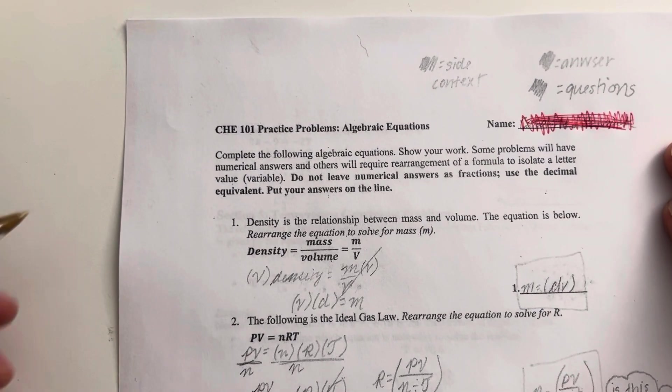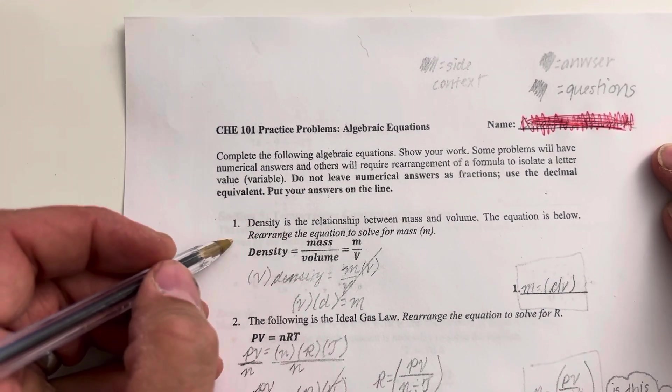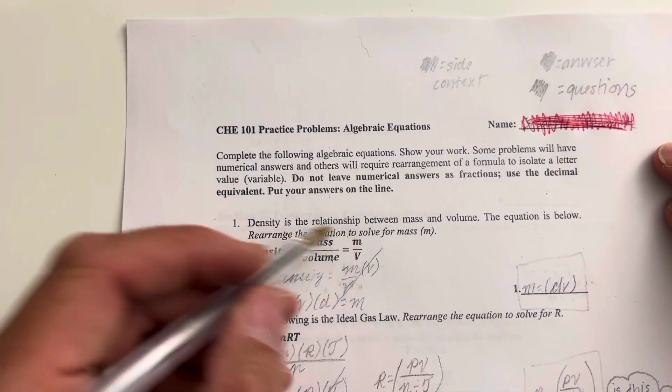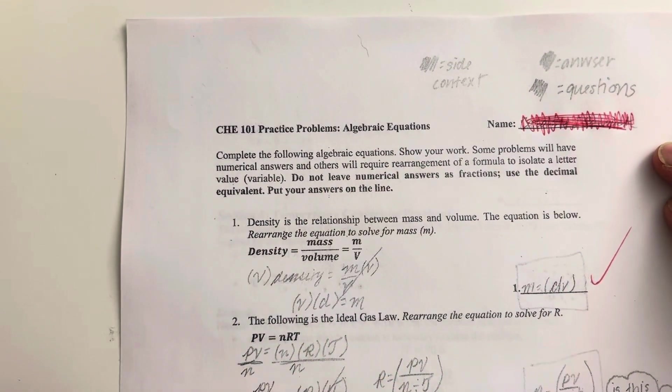Okay, so let's take a look at some of the issues here. The first one seems okay - density is equal to mass over volume, solve the problem for mass. So we get mass is equal to density times volume, that seems reasonable.